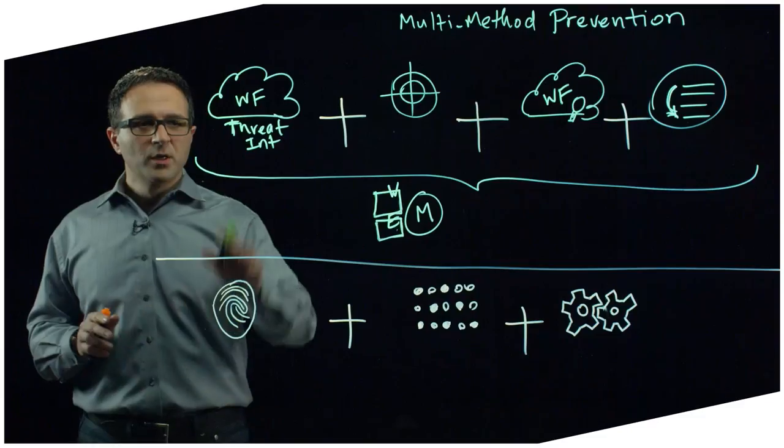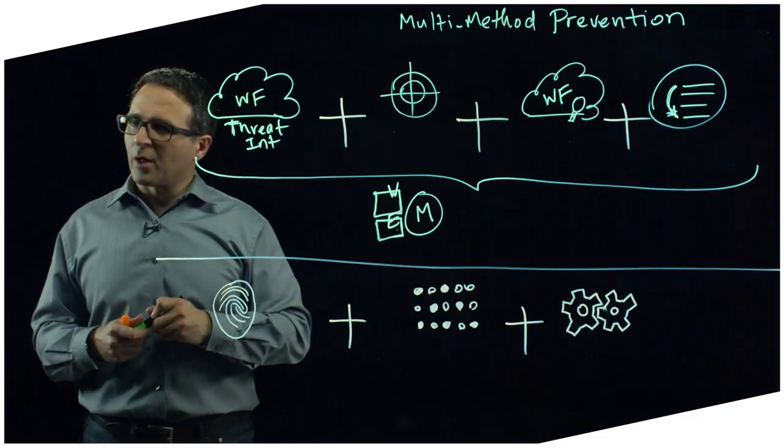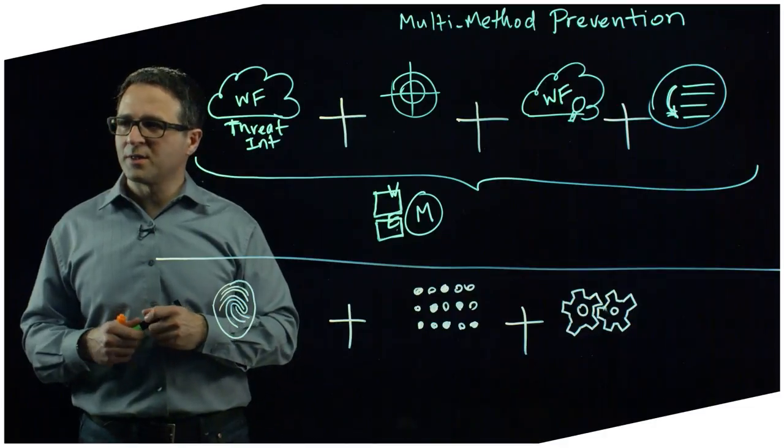And that, in combination with what we're getting from our threat intelligence partners, as well as our own Unit 42 human-curated threat intelligence, helps us to identify pretty much most of what you would probably encounter in your environment. So this allows us to prevent known malware or previously seen malware from compromising your environment.